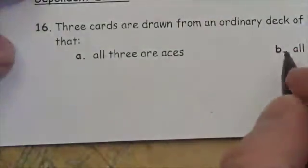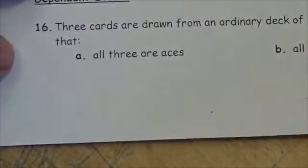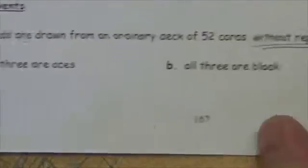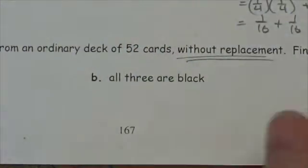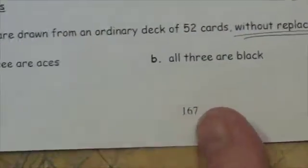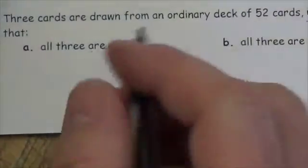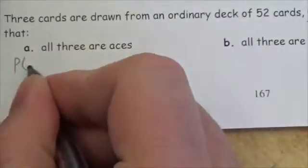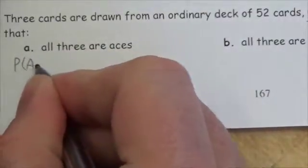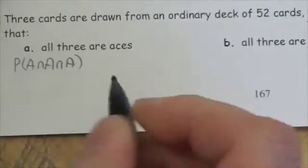Three cards are drawn from an ordinary deck of 52 cards without replacement — we're not putting that card back in. Find the probability that all three are aces. So we're looking at the probability of ace and ace and ace.